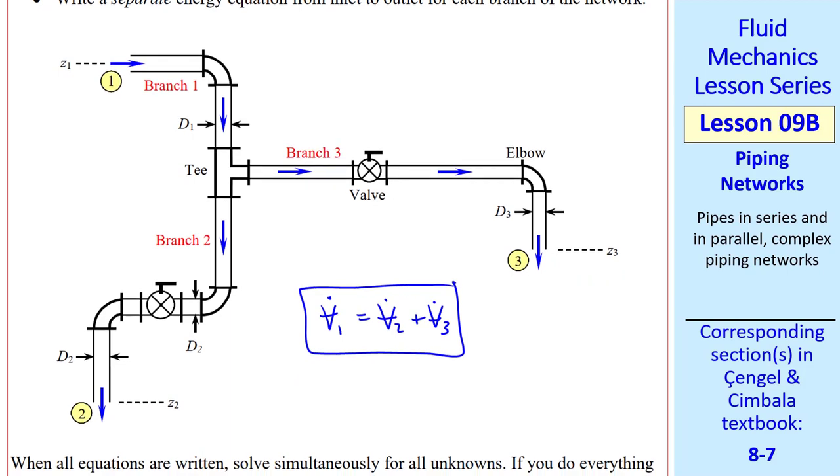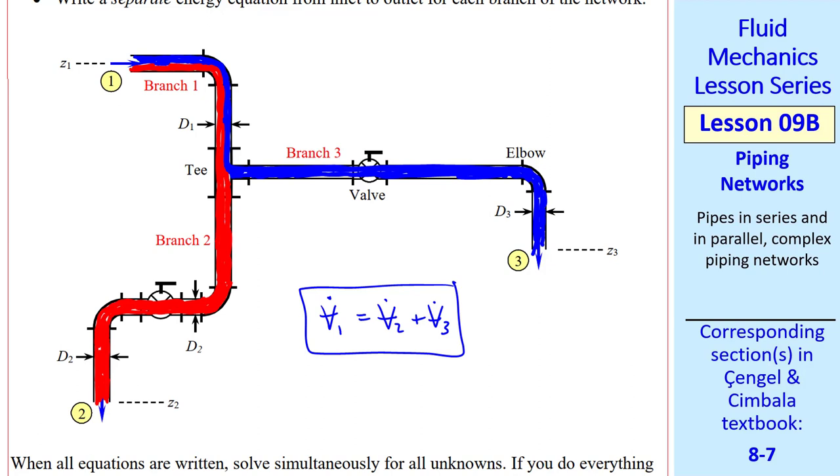We can still use the head form of the energy equation, but imagine that our water is split into blue color, which goes to branch 3, so all the blue water goes through branch 3. And the other portion of this pipe in branch 1 is red water, and all the red water goes through branch 2. In real life, the flow doesn't really split up this way, but in our thought experiment, let's pretend that there's no mixing, and that all the blue water remains separate from the red water.